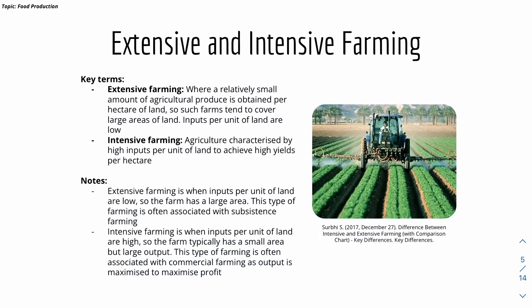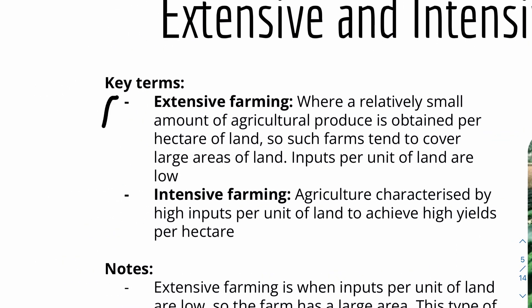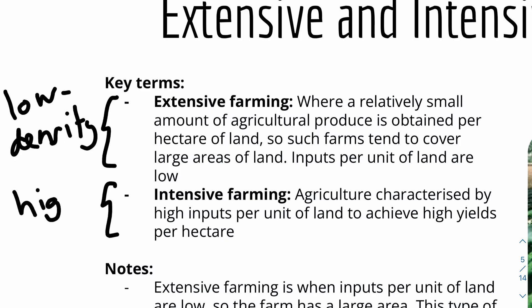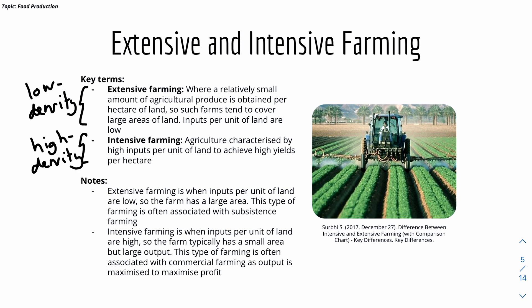Extensive farming involves a relatively small amount of agricultural produce obtained per hectare of land — it is low-density. Intensive farming is characterized by high inputs per unit of land to achieve high yields per hectare — it is high-density. Extensive farming is often associated with subsistence farming, while intensive farming is typically commercial.